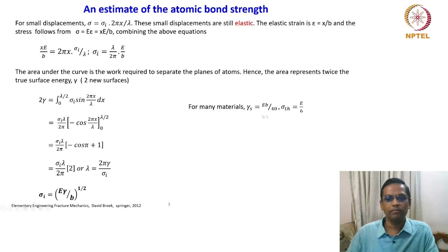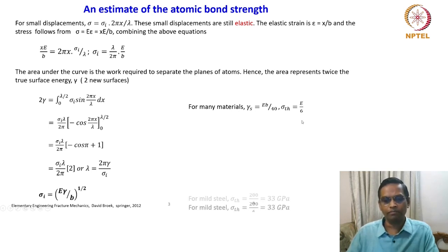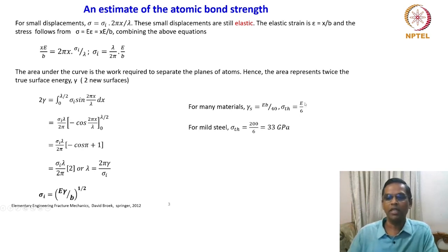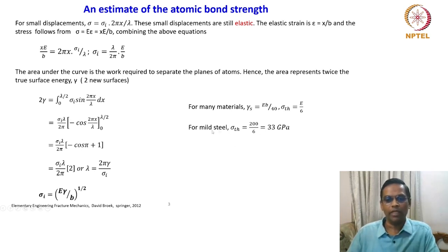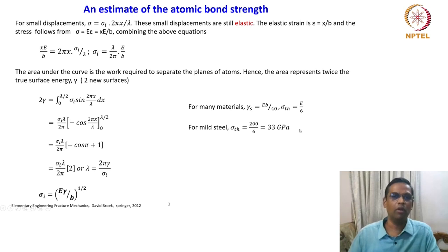For many materials, surface energy γ is given by Eb/40, so the theoretical strength is about E/6. The problem is this value E/6 is very, very high. For example, E is normally measured in GPa. For a common material like mild steel, the theoretical strength calculates to 200/6 ≈ 33 GPa, which is phenomenally high — far away from what we get in a simple tensile test. This is one big discrepancy.